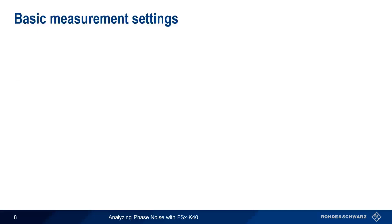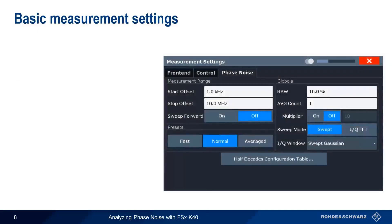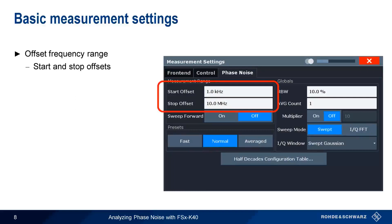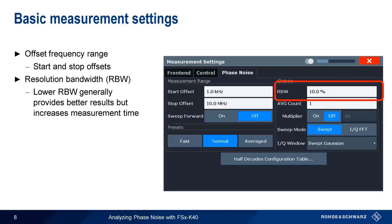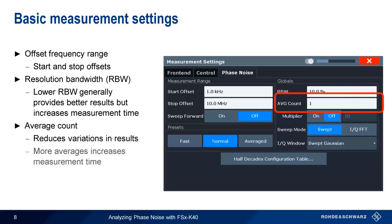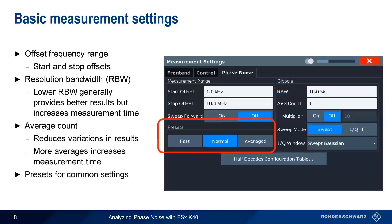After setting frequency and level, the next most important parameter is the offset range over which we measure the phase noise. This is defined using start and stop offsets, which determine the lower and upper bounds of the results plot. We can also specify the resolution bandwidth — a lower RBW generally provides better results but increases measurement time. Similarly, we can specify a number of averages, which reduces variation but also increases measurement time. Finally, a set of presets are available for common measurement tasks.